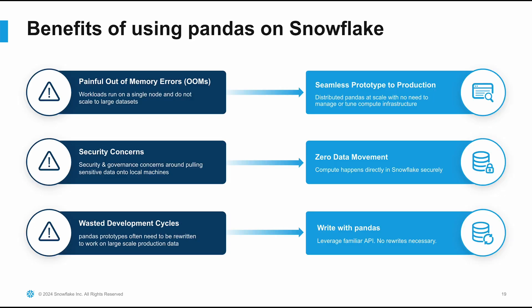In the demonstration today, you'll see how Pandas on Snowflake enables developers to keep writing Pandas code while it's automatically compiled to run on Snowflake, giving you the benefits of distributed Pandas at scale. There are no more painful out-of-memory errors, no security concerns from pulling data out of Snowflake, and no need to hand-optimize or tune compute infrastructure. Developers can use the familiar Pandas API and focus on optimizing for business outcomes and putting more pipelines into production.